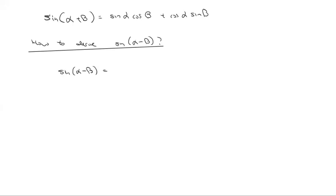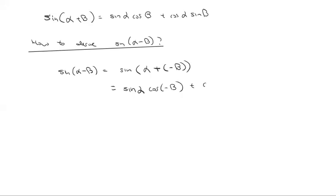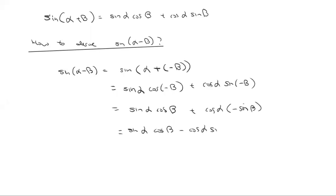We do the same as we did for cosine: write sine of alpha minus beta as sine of alpha plus negative beta, using the plus rule. It becomes sine alpha cos of negative beta plus cos alpha sine of negative beta. Since cosine of negative beta is just cos beta, and sine of negative beta is negative sine beta, we get sine alpha cos beta minus cos alpha sine beta — giving us sine of alpha minus beta equals sine alpha cos beta minus cos alpha sine beta.